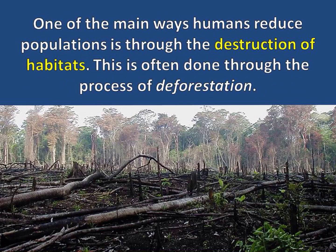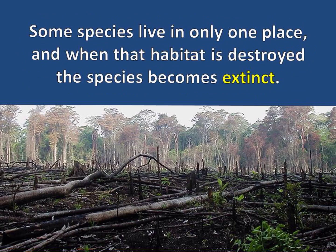One of the main ways humans reduce populations is through the destruction of habitats. This is often done through the process of deforestation. Some species live in only one place, and when that habitat is destroyed, the species becomes extinct.